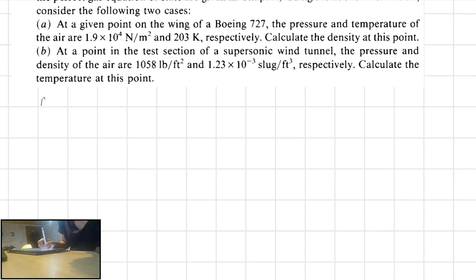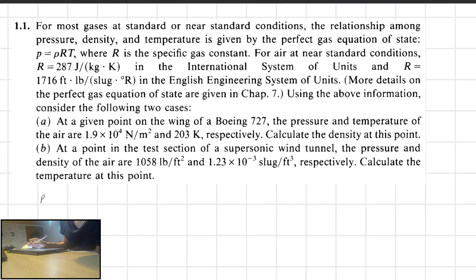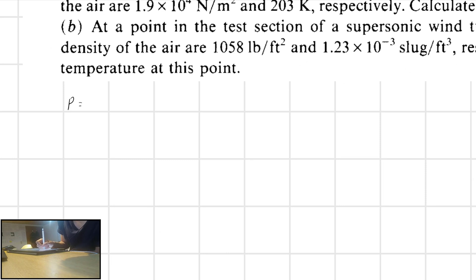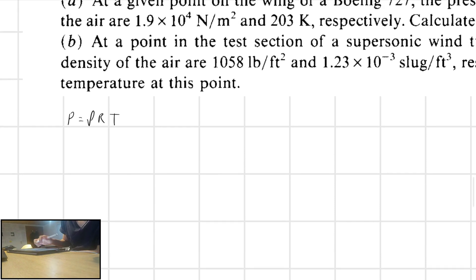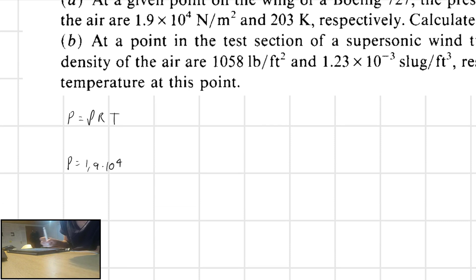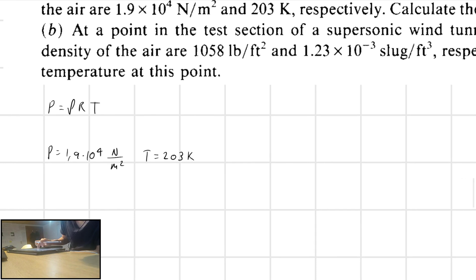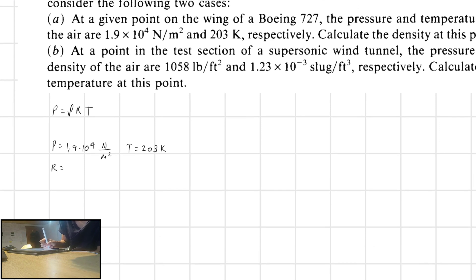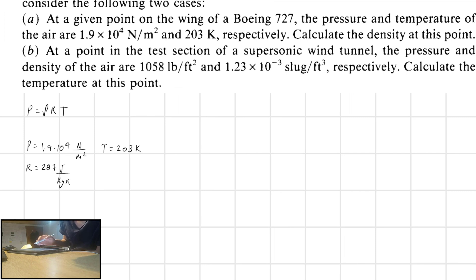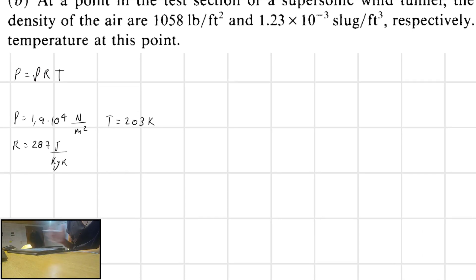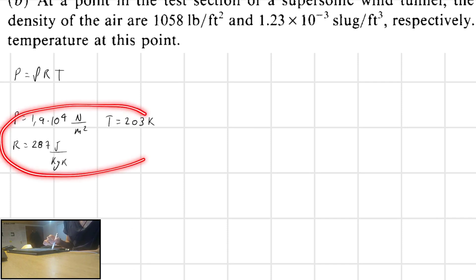They are telling me I have the perfect gas equation of state, given by pressure, density, the constant R, and the temperature. They are giving me the pressure, which is 1.9 times 10 to the 4th power Newtons per square meter. They are also giving me the temperature, which is 203 Kelvin, and the constant R, which is 287 joules per kilogram Kelvin. They are asking me to find the density.